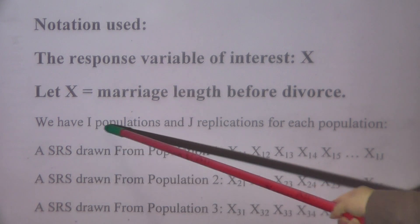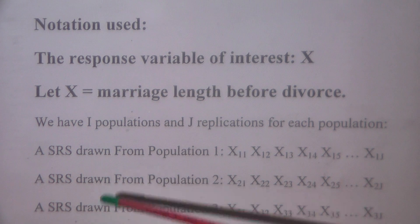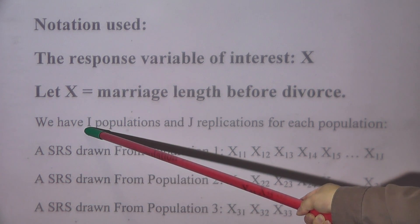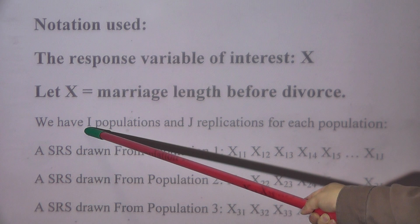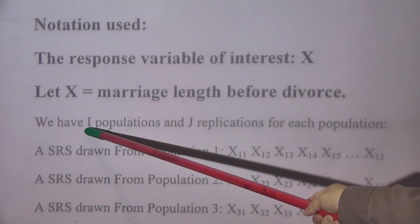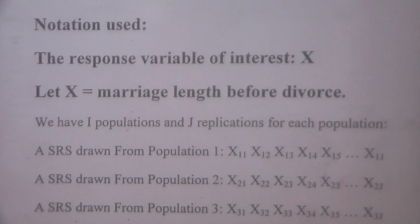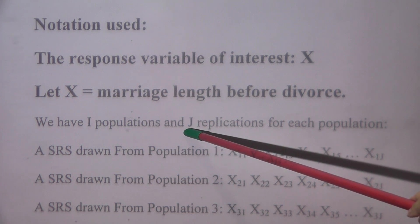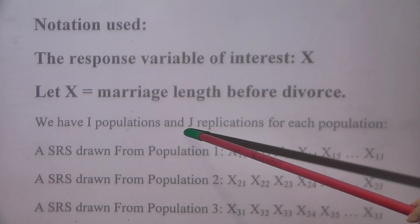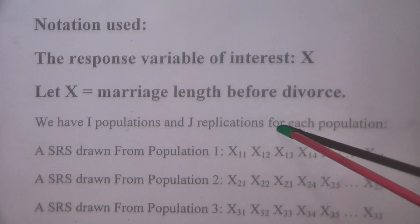Here we have i populations. In our example, the first population is a population of couples about their first marriage. The second population looks at couples of their second marriage, and population three is for couples of their third marriage. And j replications — in our example, j equals five, meaning five replications. That means whether it's the first, second, or third marriage, we all have five couples involved in our study for each population.